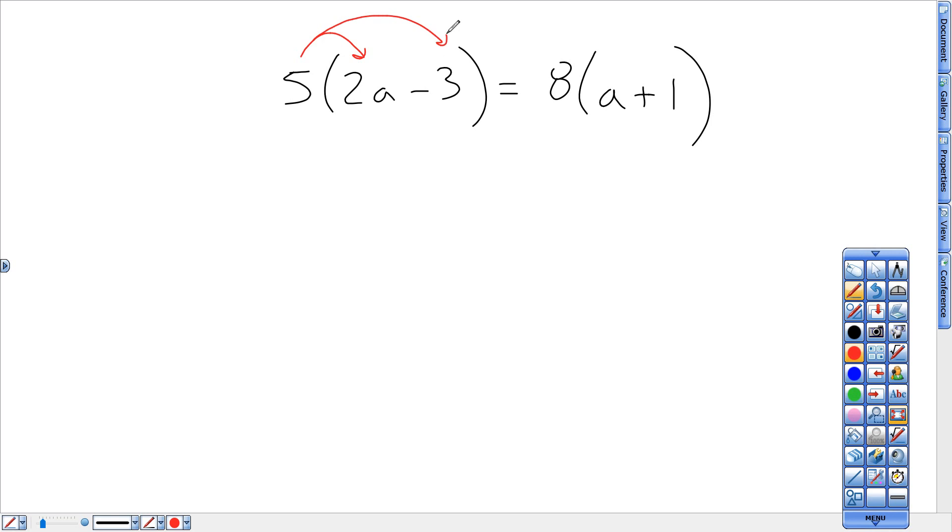Times 5 by 2a and negative 3. Other side, 8 times a and 8 times 1. After that distribute step, I get 10a minus 15 because 5 times negative 3, negative 15 equals 8a plus the all-important 8. Remembering the times, 8 times 1.